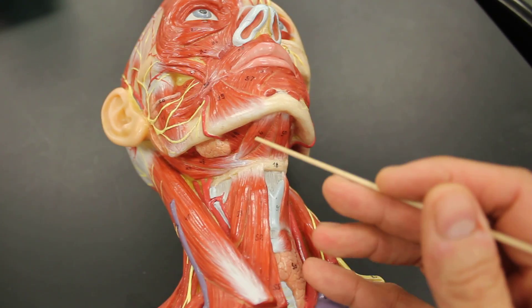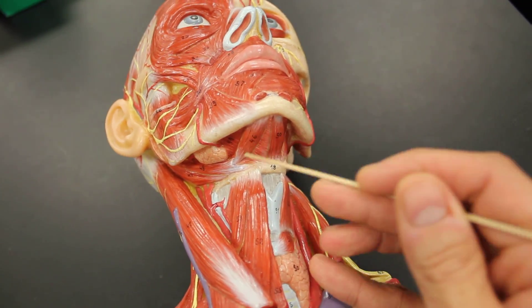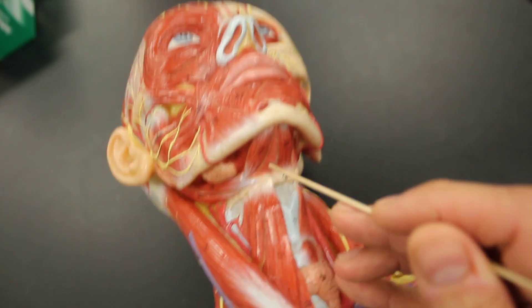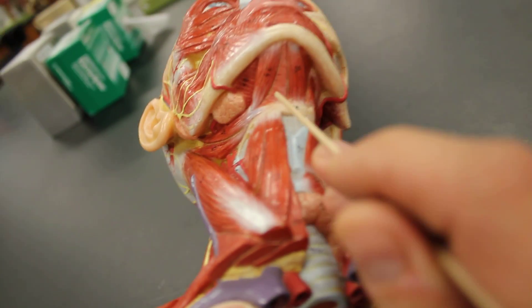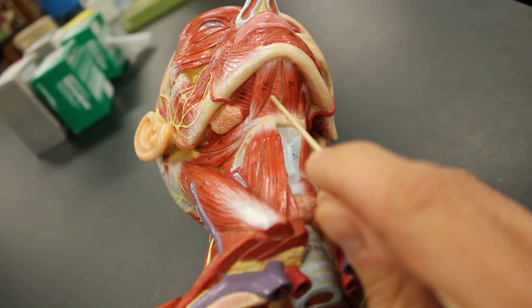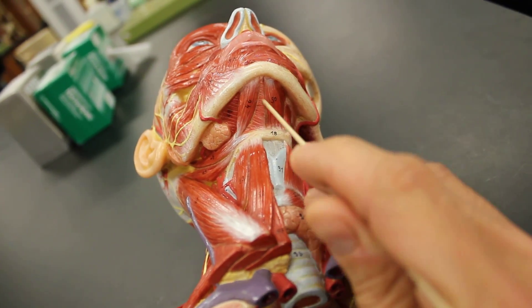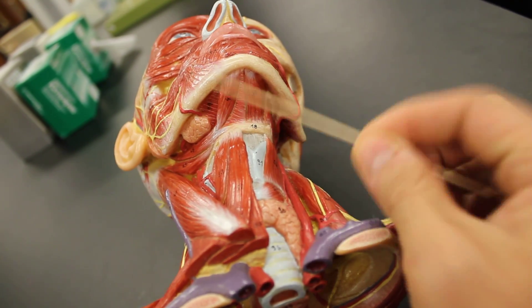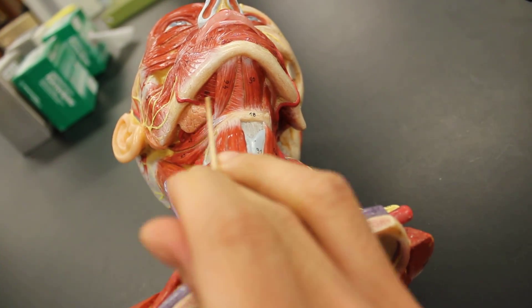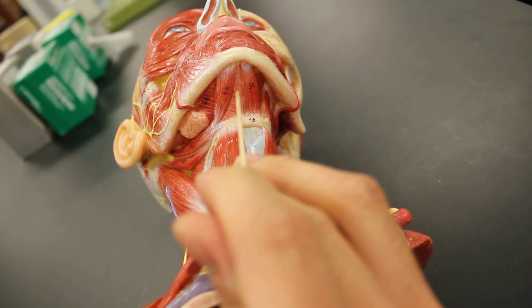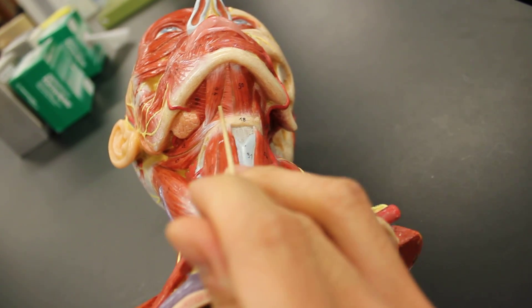The next one is just underneath the anterior belly of digastric. As you can see, if I kind of tilt it here, you'll be able to see some of the muscle fibers kind of coming in and making like a shelf from the mylohyoid line of the mandible. All this stuff going in this kind of direction. If I were to draw it, it would be these guys coming down. That's the mylohyoid.